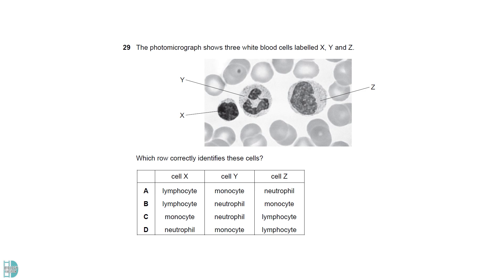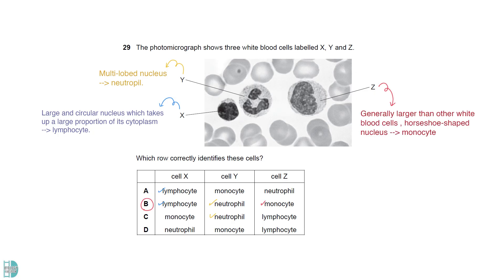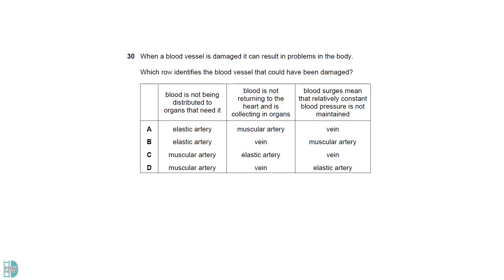X has a large and circular nucleus, which takes up a large proportion of its cytoplasm. This is a feature of lymphocytes. Neutrophils have multi-lobed nuclei. Monocytes are generally larger than other white blood cells, and have a horseshoe-shaped nucleus.